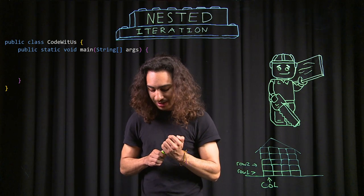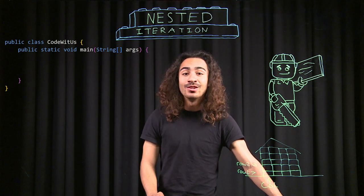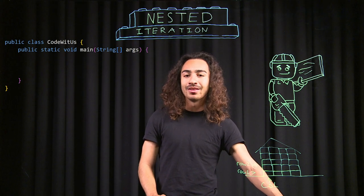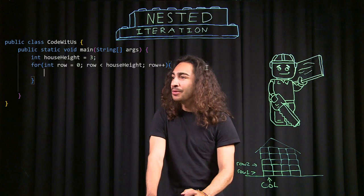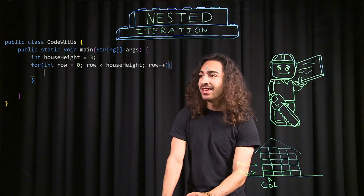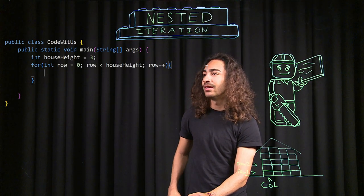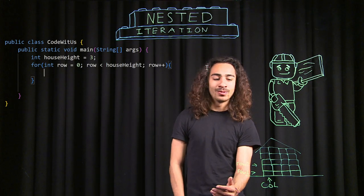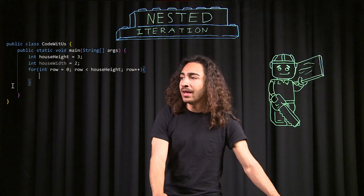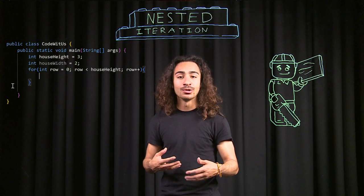So how would I do this in Java code? Let's start by doing what we already know — let's just make one loop and loop through the rows. We make our for loop: we make a variable row set to zero, then make it less than house height — that's our condition — and then we increment row by one. I made house height three, so our house is going to be three bricks tall. This loop is going to be our outer loop because it's going to hold the other loop inside of it.